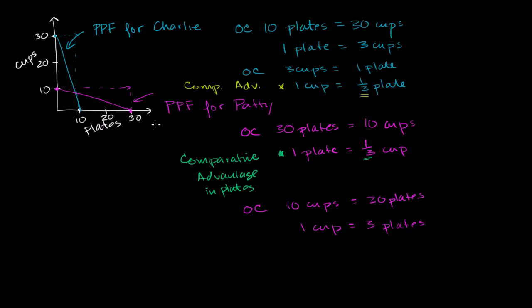If both parties specialize in their comparative advantage and then trade, they can get outcomes beyond each of their individual production possibility frontiers. For example, they can each end up with 15 cups and 15 plates, which would have been impossible left to their own devices. Charlie has comparative advantage in cups — his opportunity cost is one third of a plate versus Patty's three plates — so Charlie specializes in cups and produces 30 cups every day, while Patty specializes in plates and produces 30 plates every day.